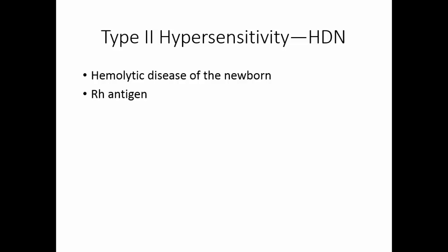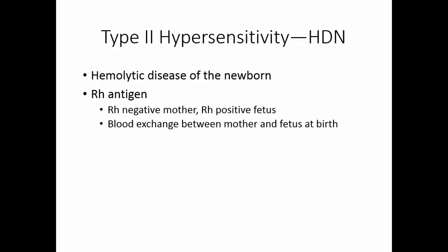Another kind of type 2 hypersensitivity is hemolytic disease of the newborn, or HDN. This involves the RH antigen. For this to happen, you have to have an RH-negative mother who gives birth to an RH-positive fetus. If at the time of birth there is some exchange of blood between the mother and the fetus, then the mother can become sensitized. Mom does not have any RH antibodies unless she is exposed to RH-positive blood. If she is, she makes IgG-type antibodies to RH.